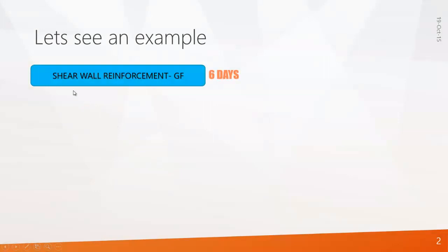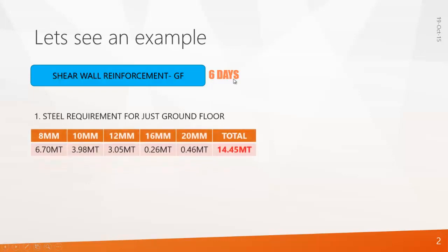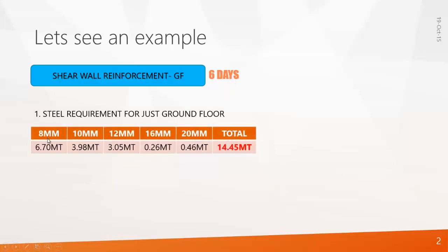Look at this activity: Shear Wall Reinforcement for Ground Floor. To perform this activity, we require 6 days. To do this activity we require steel — 8mm: 6.7 metric ton, 10mm: 3.98, 12mm: 3 metric ton, 16mm: 26 metric ton, 20mm: 0.46 metric ton, and total we require 14.45 metric ton. I arrived at this calculation from structural drawings, and we require binding wire of 500 kg.